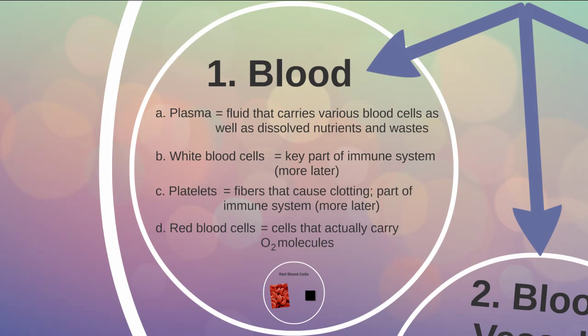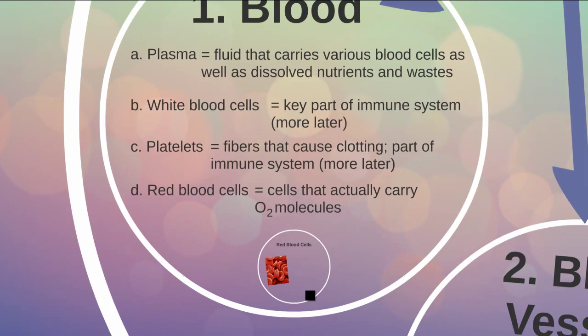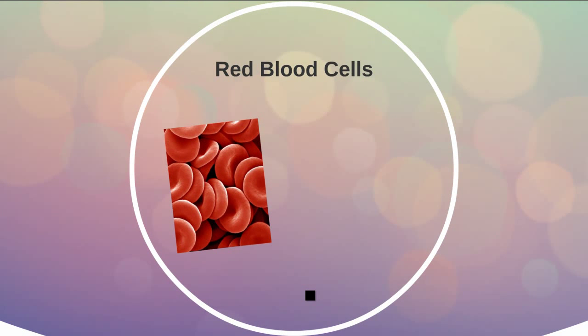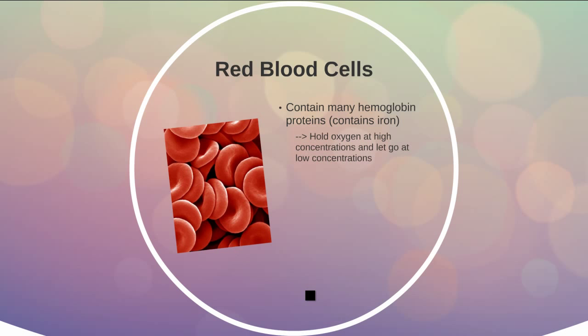What we're going to focus on here more are the red blood cells, which are specifically designed to carry oxygen molecules. They contain hemoglobin proteins — a protein folded in a specific way that holds an iron atom. It's able to pick up oxygen at very high concentrations but let go of it at very low concentrations. So when red blood cells are in the lungs, they pick up oxygen, and when they get out to the cells in the capillary beds, they release their oxygen.